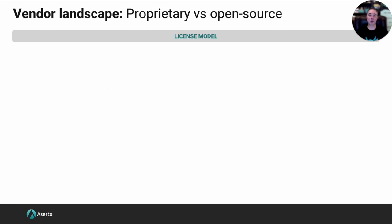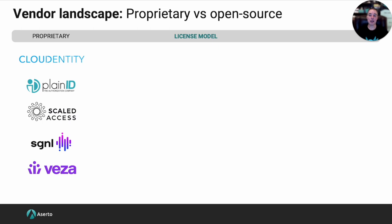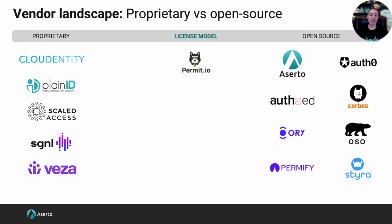The last axis — there are at least 10 but we only have time for three — is proprietary versus open source. On the left are vendors that may use open source in their offerings but don't open source their own engine. On the right are open-core vendors that have open sourced the core engine and built commercial solutions on top. Permit sits somewhere in the middle — built on top of OPA with open source portions including the control plane, but their core authorizer is not open source.